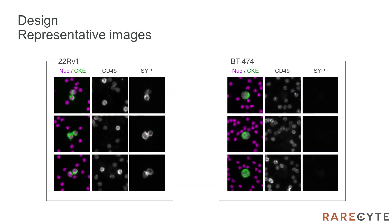Representative images of 22RV1 and BT474 spike-in samples stained with the neuroendocrine assay are shown here. The CTCs are in the center of each image panel as indicated by the presence of cytokeratin and/or EPCAM staining in green and the absence of CD45 staining. 22RV1 cells exhibit cytoplasmic synaptophysin staining distribution in contrast to the lack of apparent synaptophysin staining for BT474 cells.